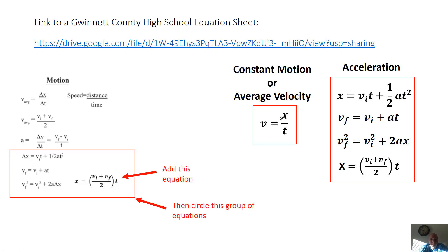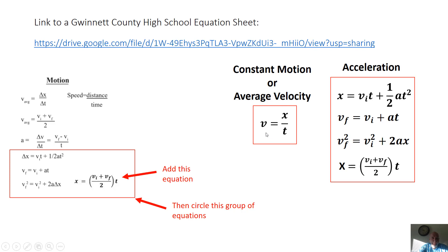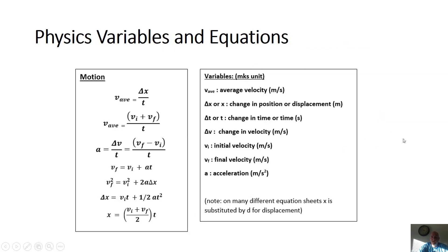If you're in my class, you have an equation sheet — make sure it's printed because you'll reference it constantly. I want you to think of four acceleration equations, not just the three on the sheet. Add the extra equation that can be derived from the other two. When you have constant motion, use V = X/T. When velocity is changing and you have enough variables, you'll use one of the four acceleration equations: VI, VF, A, X, and T.